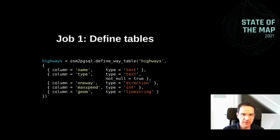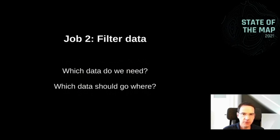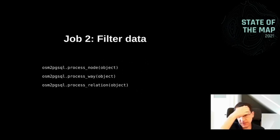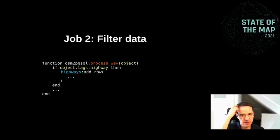Here's an example. We define a highways table — a table for highway data with columns for name, type, oneway, maxspeed, and geometry. The second job the config file has to do is filter the data: which data do we actually need, and where should it go? We do this by defining three functions called process_node, process_way, and process_relation, which take an object and can import data from it into different tables. For example, a process_way function takes an object and when it has a highway tag, we import it into the highways table using the add_row function.